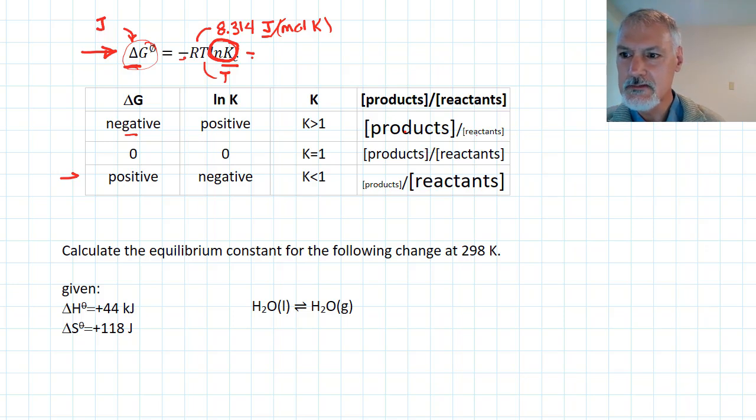And finally, if delta G is equal to 0, ln K must equal 0. And that only happens when the equilibrium constant is about 1. So, there's the use of that expression and how it maps between delta G and K. Negative delta G spontaneous reactions have K values bigger than 1. Non-spontaneous reactions have K values that are less than 1.